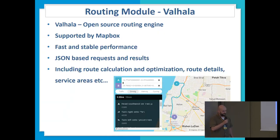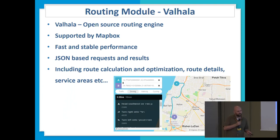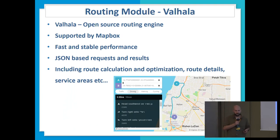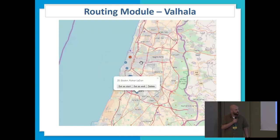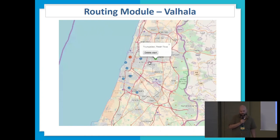One more capability very much demanded by the Israeli government is routing, and we chose Valhalla for Israeli routing services. It's currently supported by Mapbox, who acquired the team that used to develop it. It's fast and reliable, JSON-based for both input and output, and provides everything we need in terms of route calculations, route optimizations, and service area calculations. We're going to allow it both on our portal interface and through API for mass calculations, free of charge, the same way our API allows other functions.